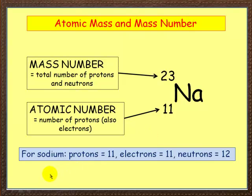Now for sodium, we can work out how many protons, electrons and neutrons it's got. This number here tells us it's got 11 protons. This number here also tells us it's got 11 electrons. And the difference between these two gives the number of neutrons — so 23 minus 11 is 12. So: 11 protons, 11 electrons, and 12 neutrons. Got it? Very easy.